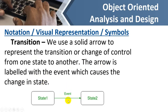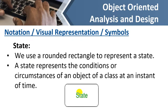The arrow has the event name and it describes from which state to which state we are going. A state is represented by a rounded rectangle. A state represents the condition or circumstances of an object of a class at an instance of time.